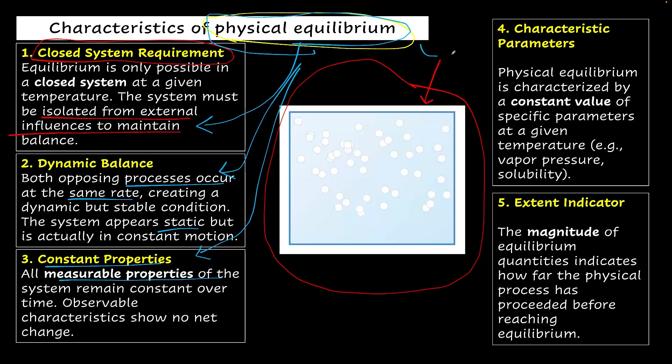And we also observe that the characteristic parameters are of constant value at a given temperature, like the vapor pressure, solubility. At the given temperature, those values remain constant.